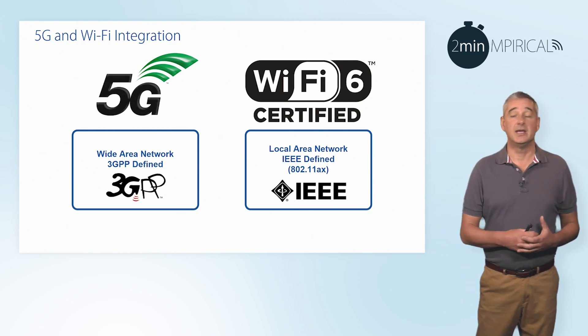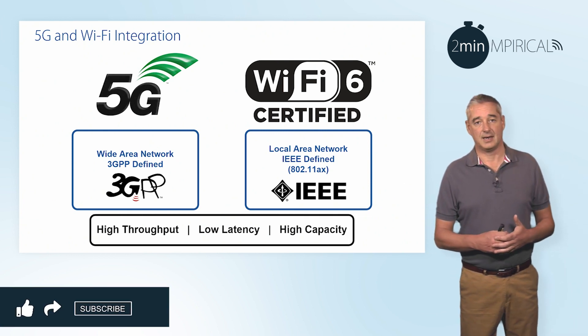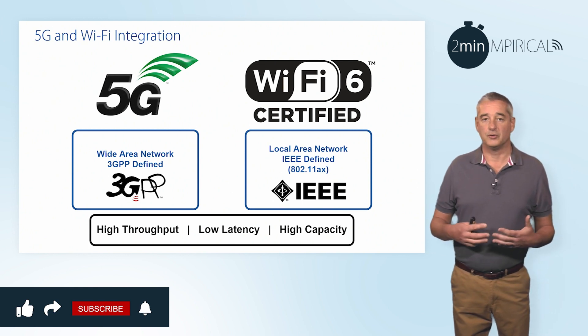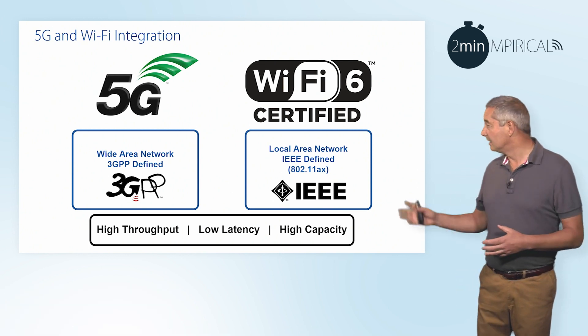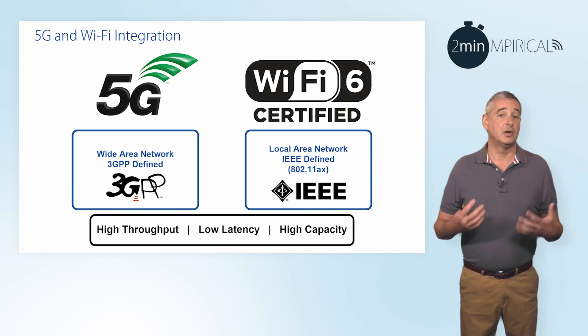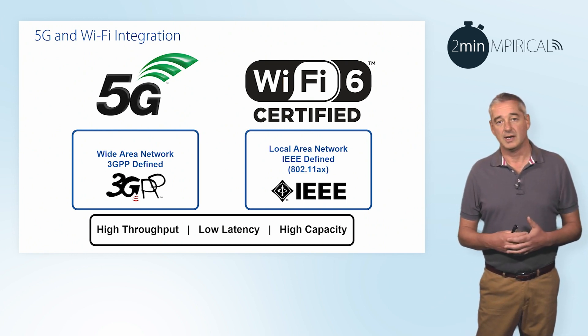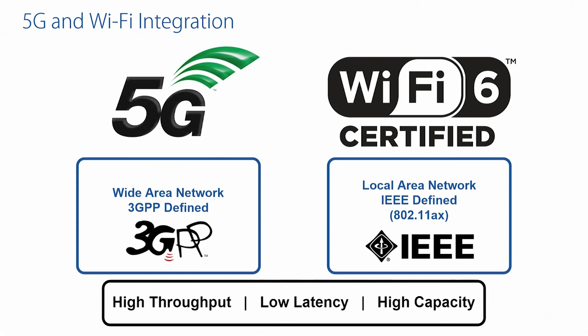Be it 5G or Wi-Fi 6, we can see there are commonalities. In terms of high throughput, both systems support gigabits per second data throughputs. Low latency in terms of the time it takes to move information across the network, here in the case of milliseconds. And finally, high capacity — the ability to support many hundreds of devices per radio or base station.